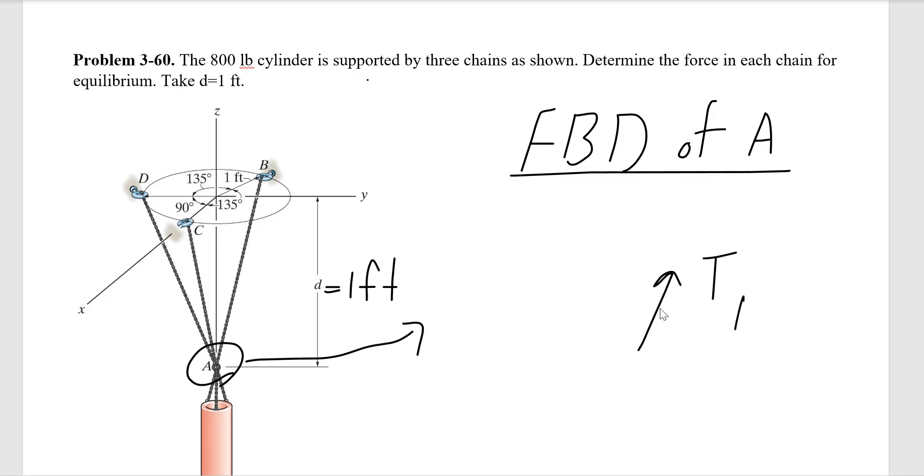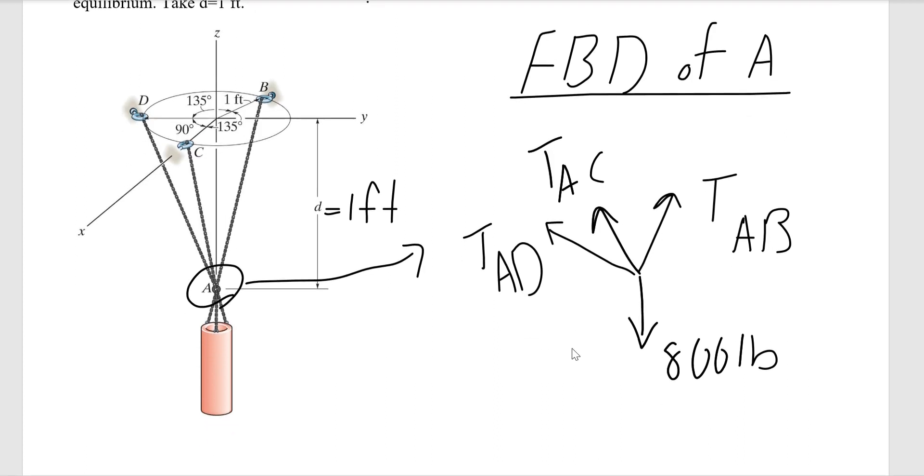The free body diagram of A tells me that we have three forces: TAB, TAC, TAD, as well as the 800 pound cylinder. Looking at our free body diagram, we see that we have three unknowns, and in 3D equilibrium we have three equations, so we can solve for our unknowns. But we do not have these forces in Cartesian form.